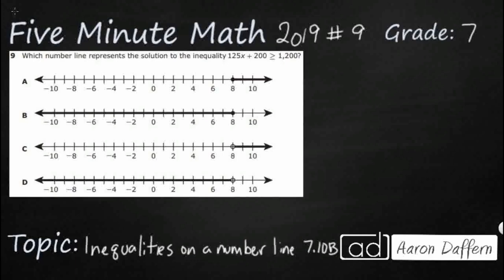So we have four different number lines here. They all range from negative 10 to 10 and we need to represent the solution to this inequality. So 125x plus 200 is greater than or equal to 1200.